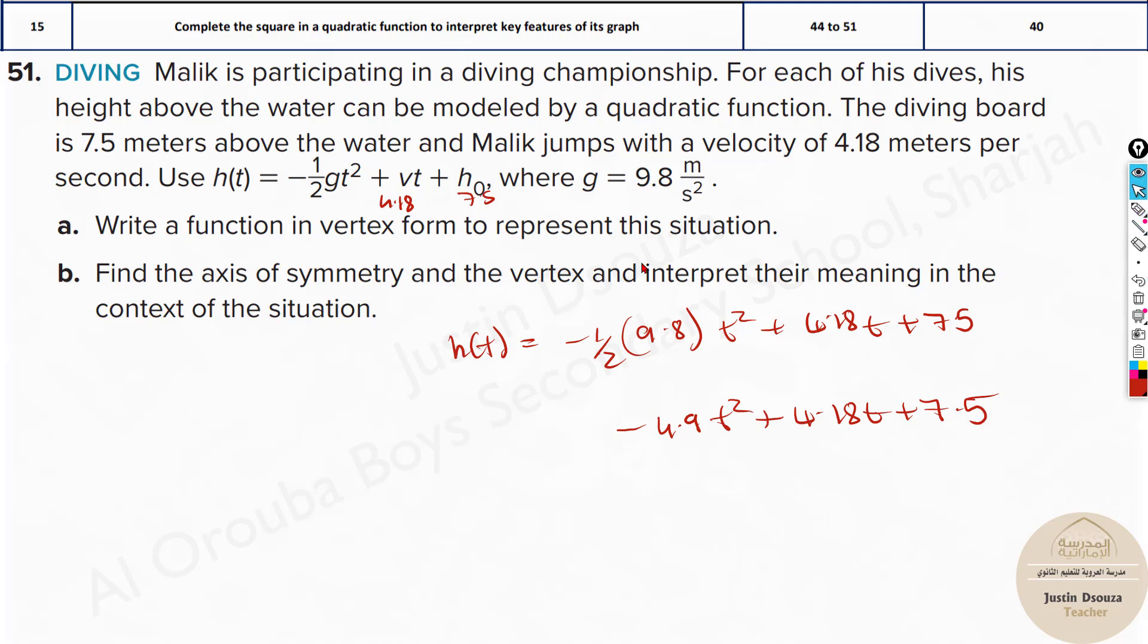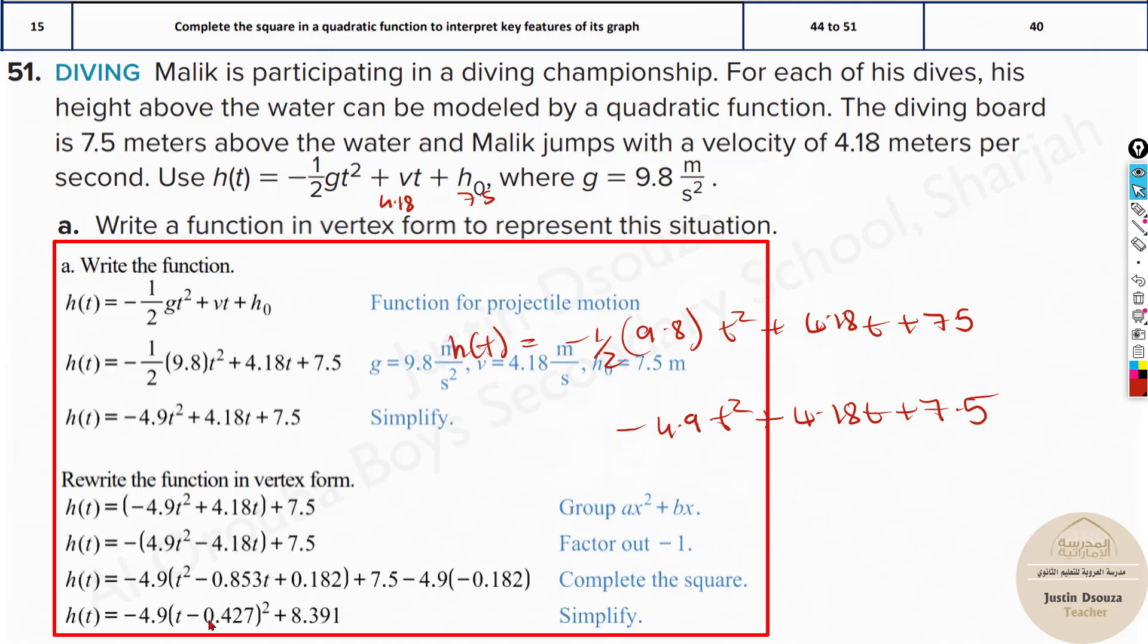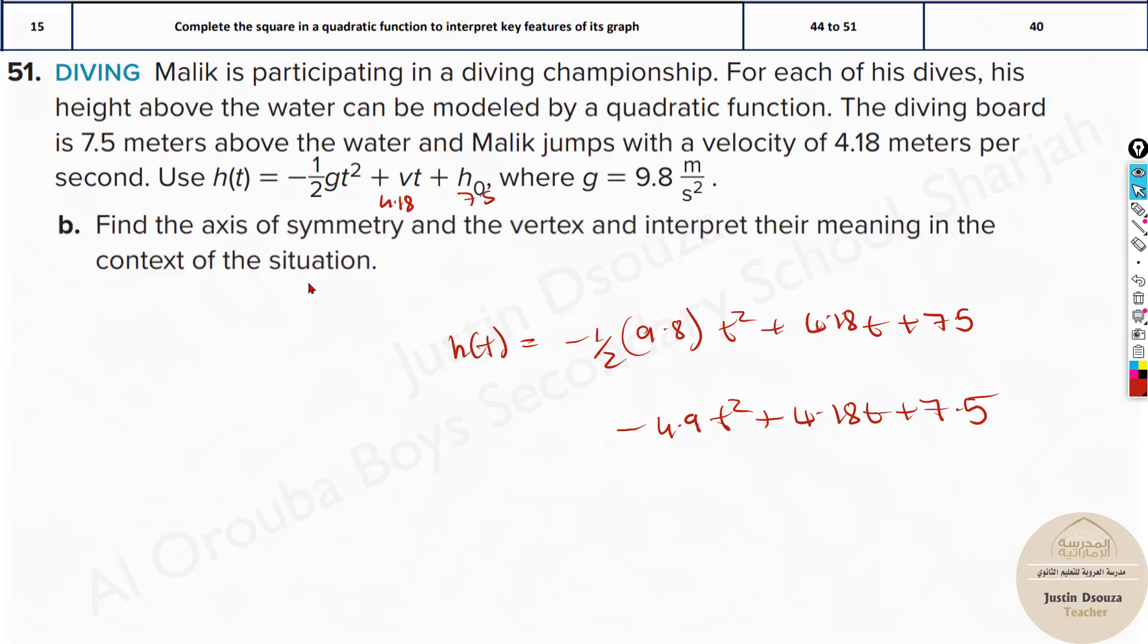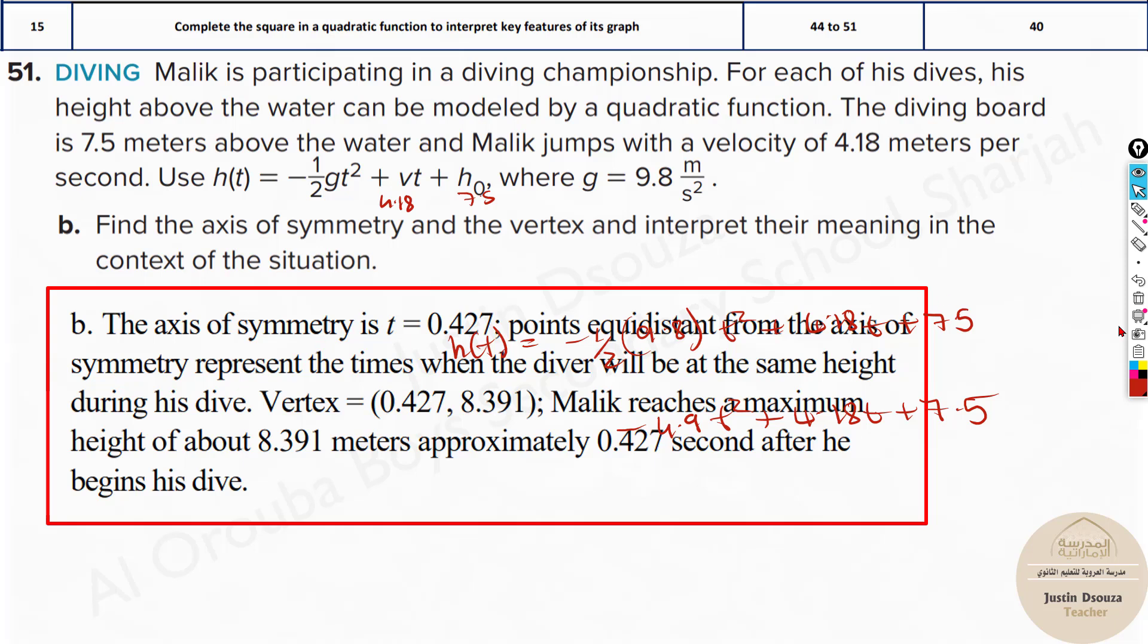Now you can easily do the vertex form representation, which we have done. You can just compare these both and check which is the vertex form. And here, axis of symmetry and vertex—you can easily use the formula minus b by 2a and get these answers as well. So once you get the x-value, if you put it back in the equation, you can find the y-value as well.